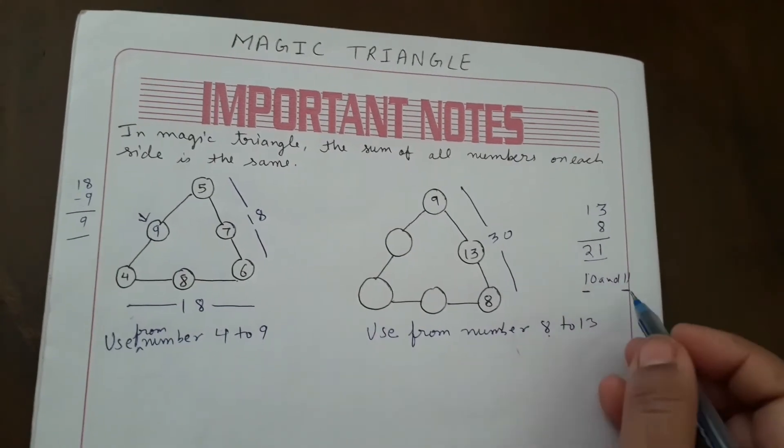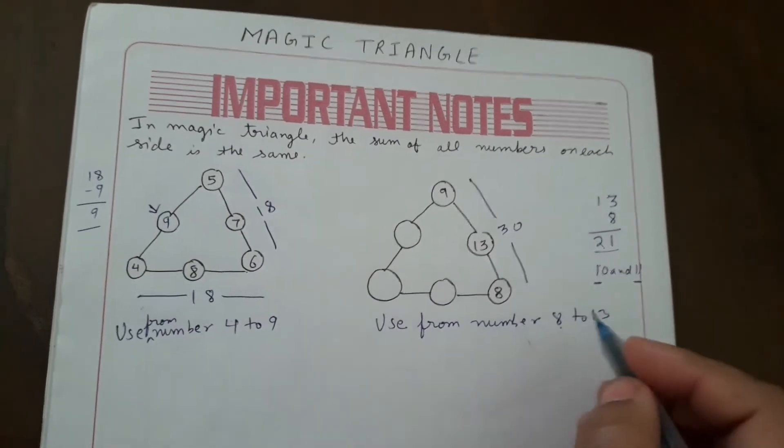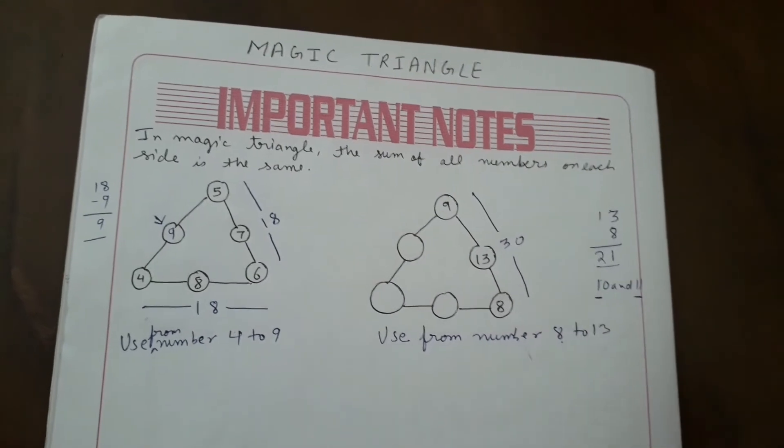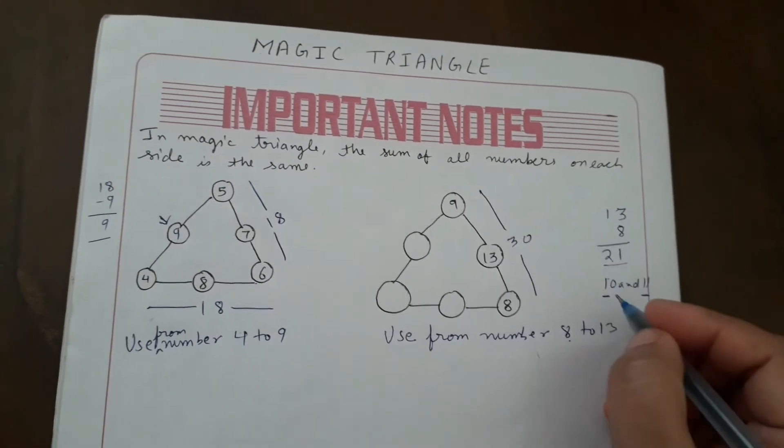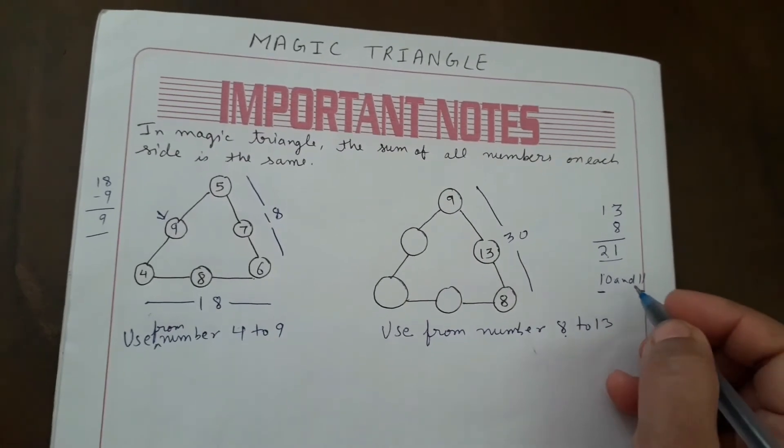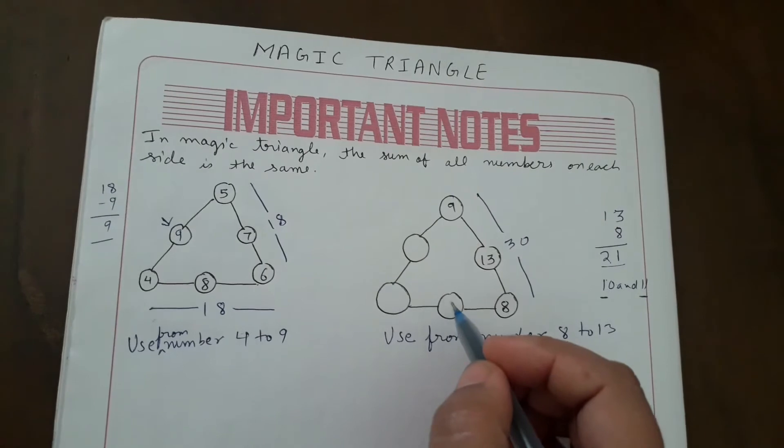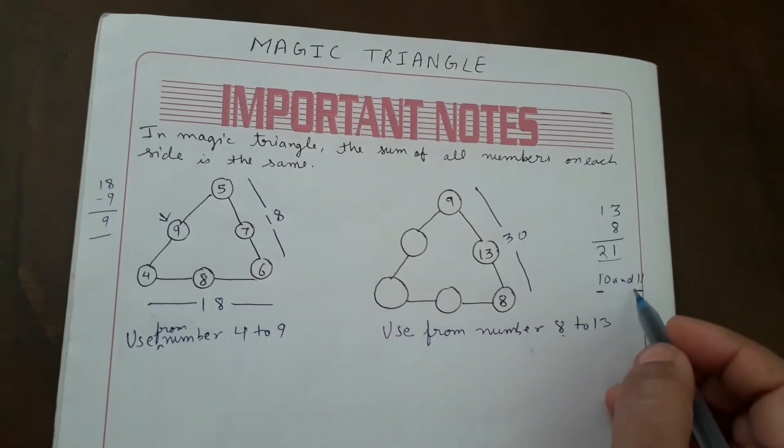We got 10 and 11. Now we put 10 and 11 - here or here? We have to see. 10 plus 11 - we have to see how much sum is needed.